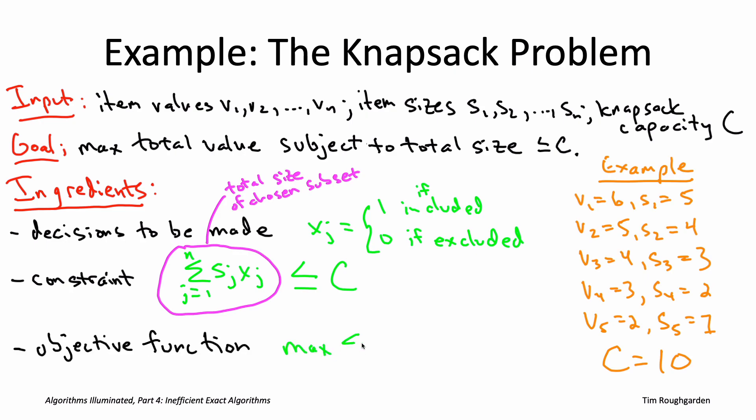That's just maximizing the total value of the chosen items. Just like the total size was easy to express as a sum in terms of the xj's, so is the total value. It's exactly the same sum except with the sj's replaced by the vj's. You just saw your first mixed integer program, your first MIP.